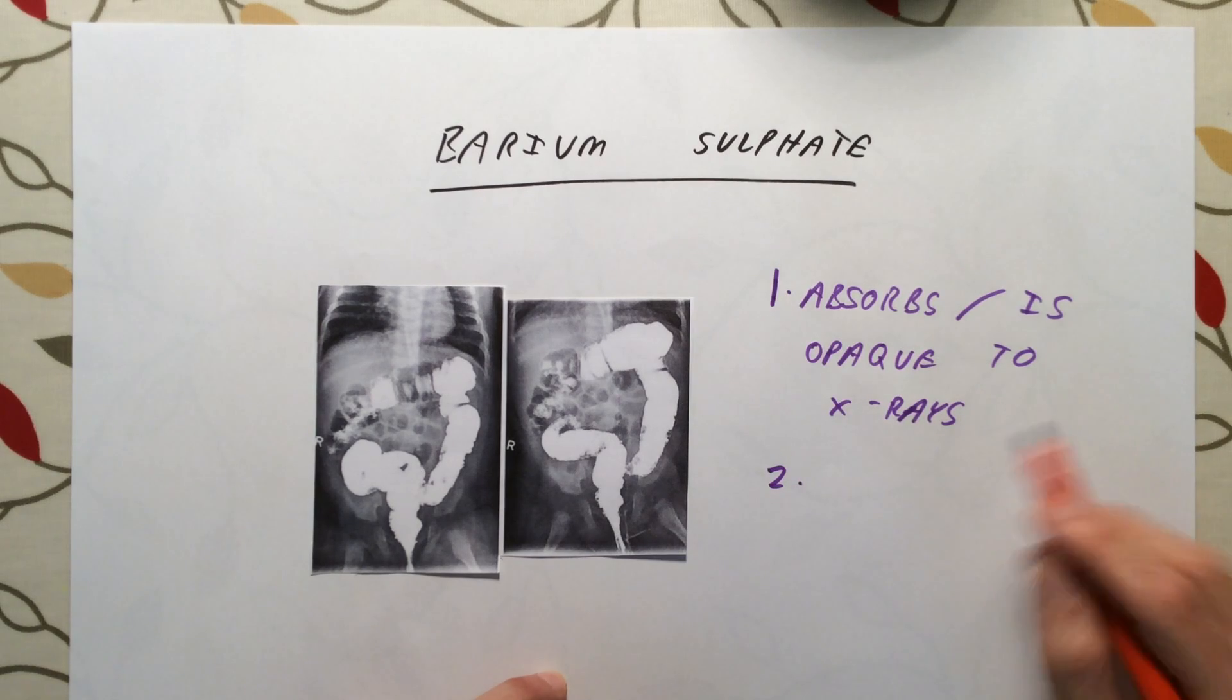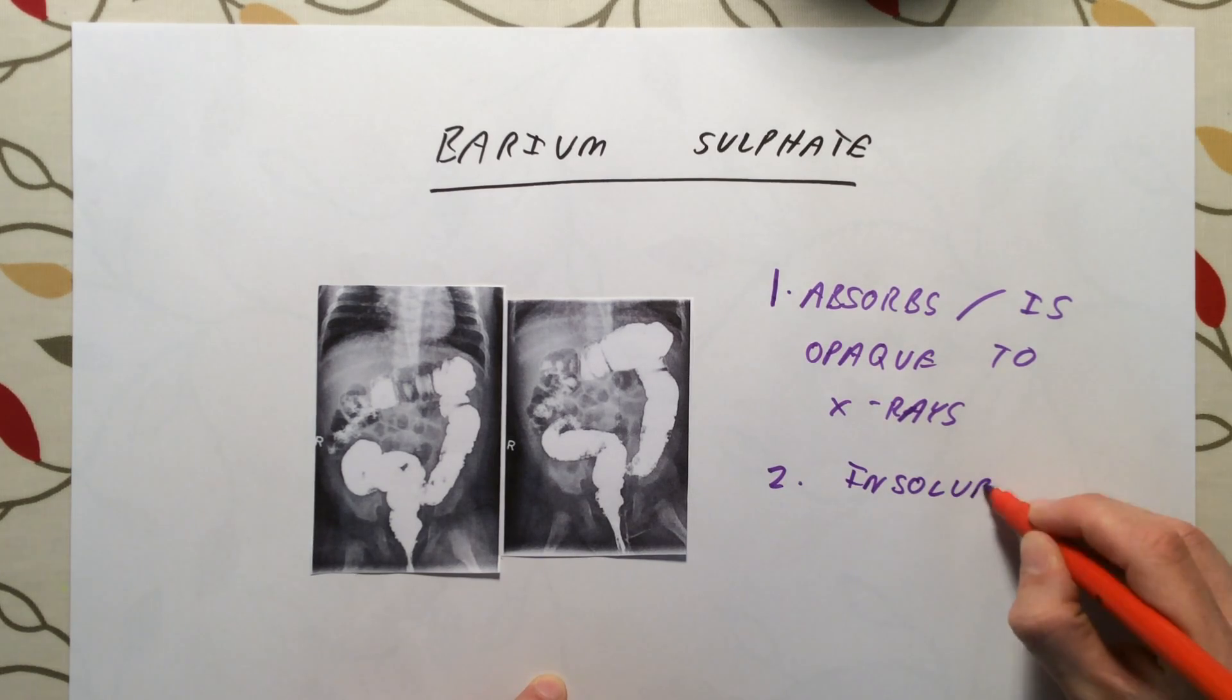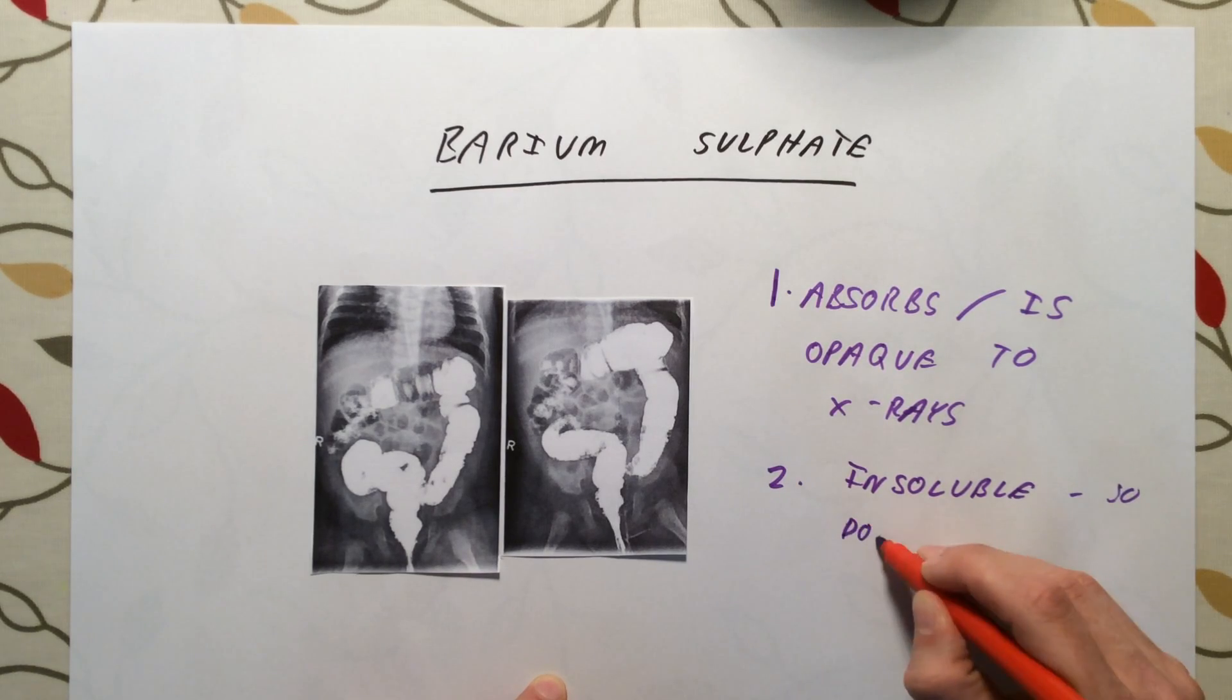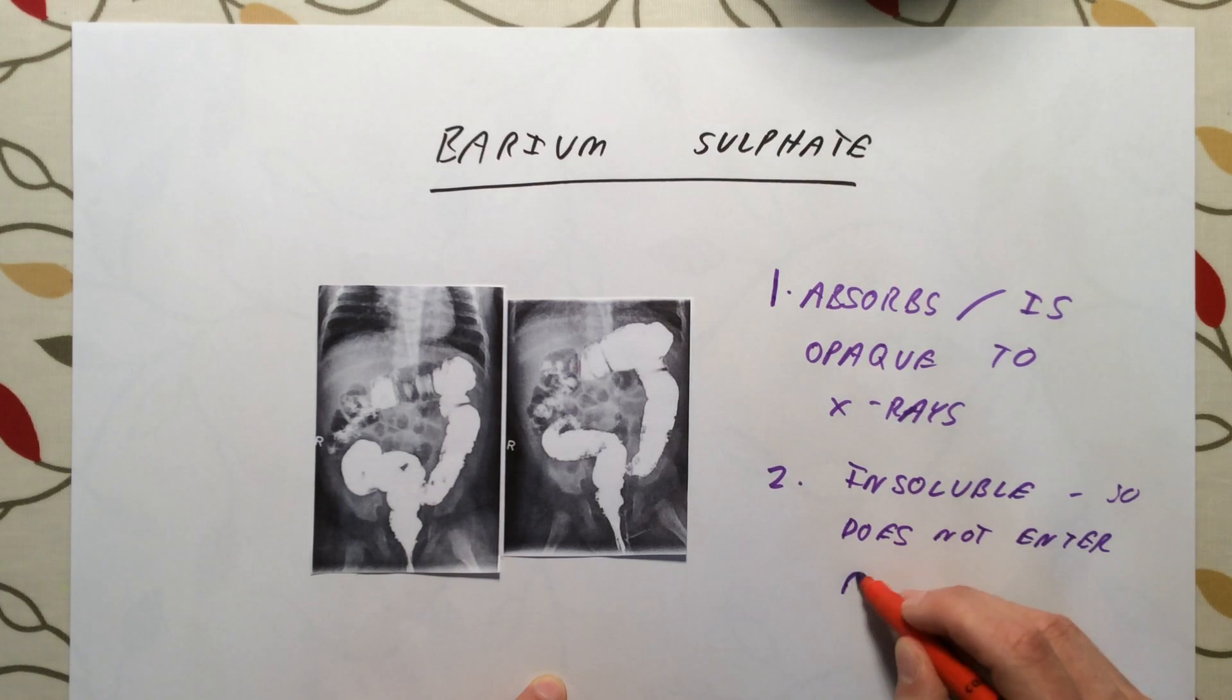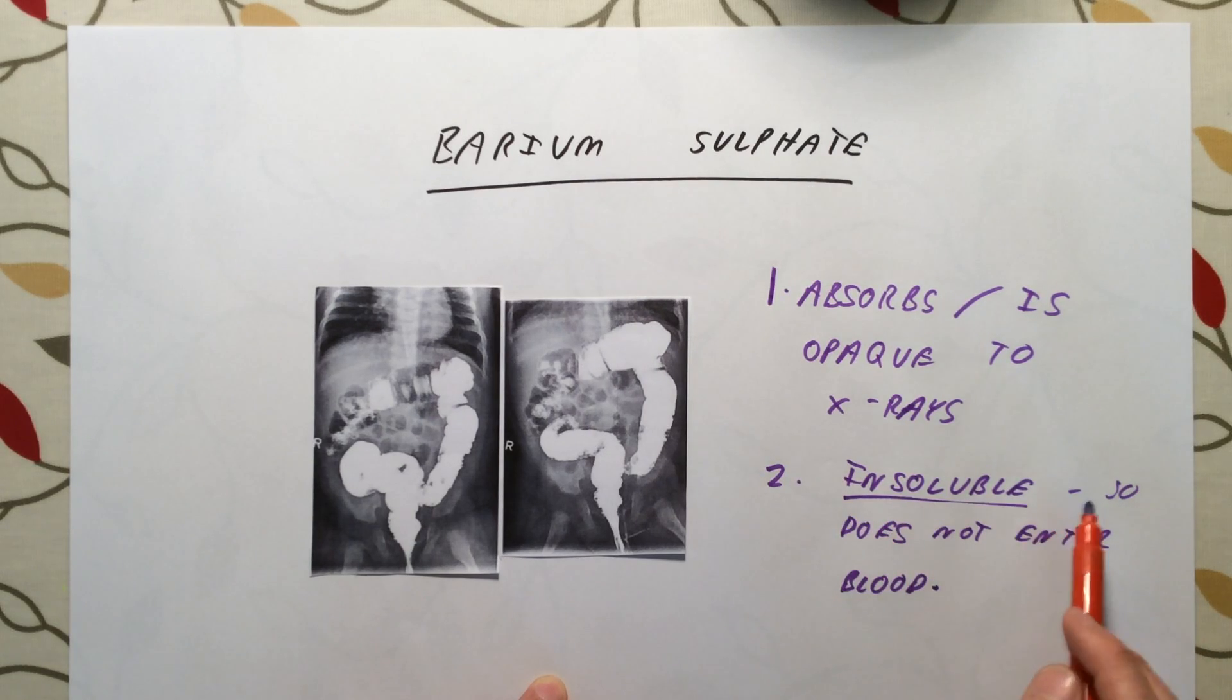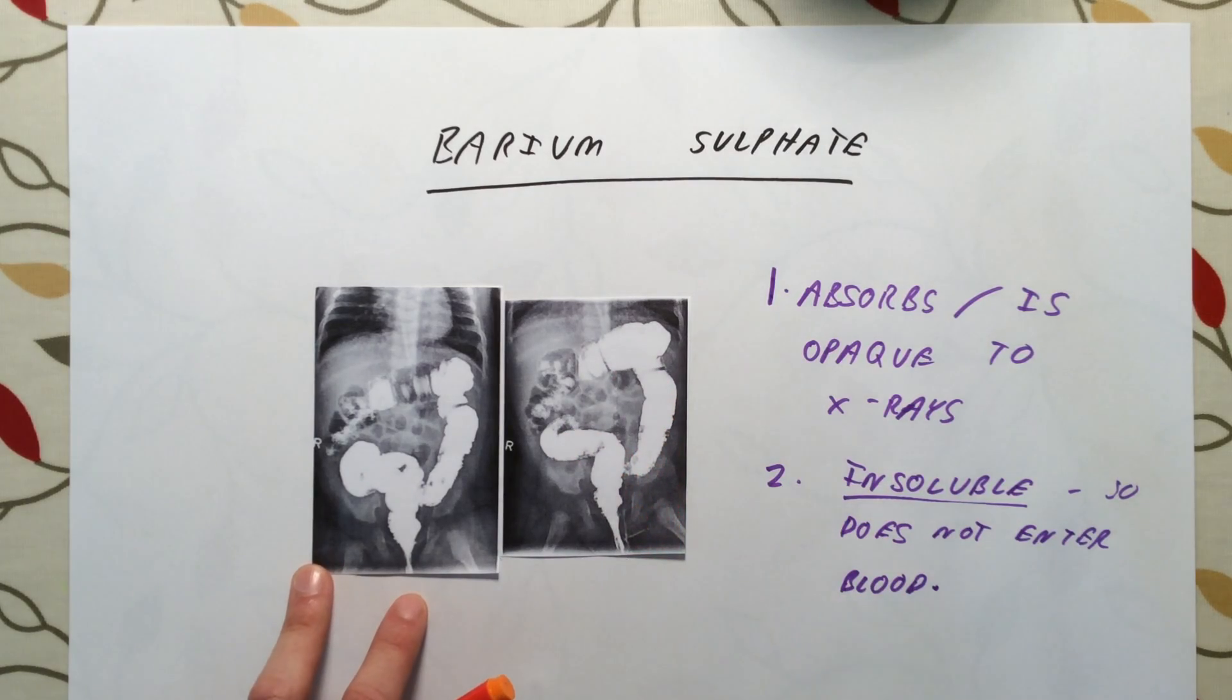The second reason, because it is insoluble, because it does not dissolve, it does not enter the blood. So it is insoluble in water, so does not enter the blood, which is really, really good because if it did it would kill you. Barium salts are generally toxic. However, because it does not dissolve in water, it can't get in your blood so it wouldn't cause you any damage. It will simply pass straight through your digestive system.